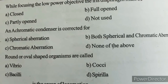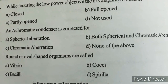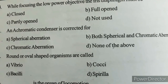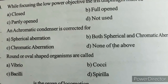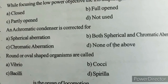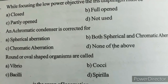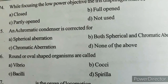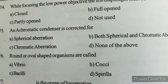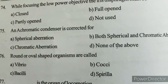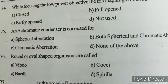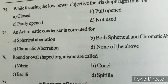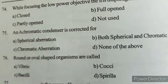Next question: Round or oval shaped organisms are called? Option A) Vibrio, Option B) Cocci, Option C) Bacilli, Option D) Spiral. Correct answer: Option B — Cocci.